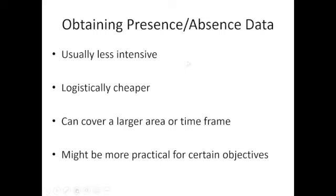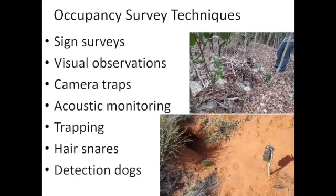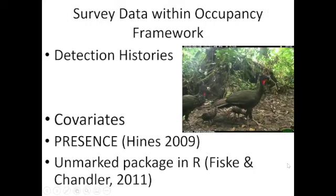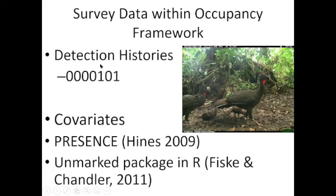Obtaining presence-absence data is generally less intensive, logistically cheaper than trapping and tagging, and can cover a large area or time frame. All different types of occupancy survey techniques can produce repeated presence-absence data. Within the occupancy framework, survey data are organized as detection histories. For example, a camera trap deployed for seven days for a crested guan: if we got no photo on days one through four but detected a guan on day five, that's recorded as a '1' — we don't care about counts, just presence.